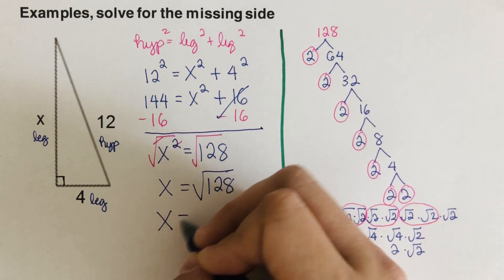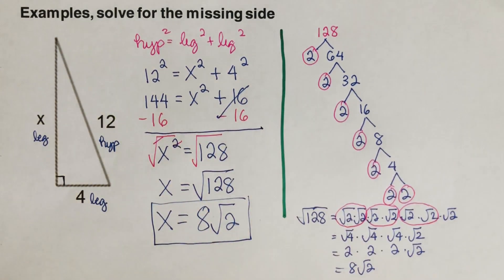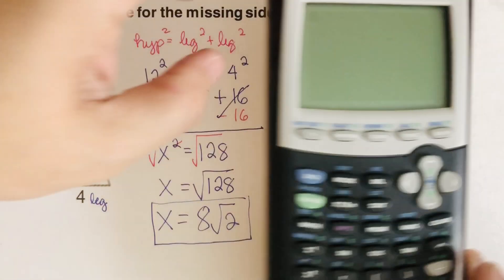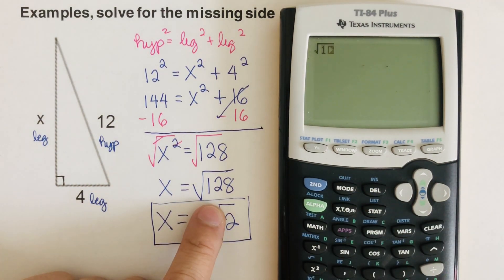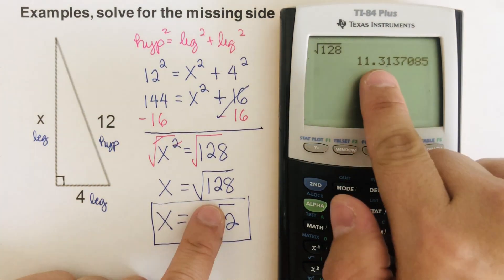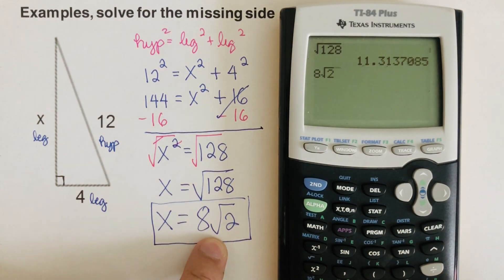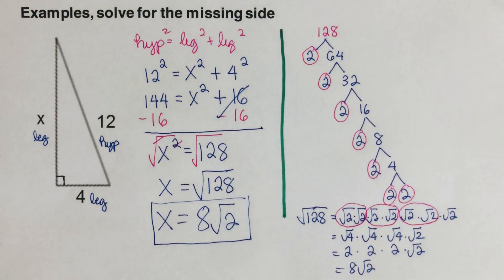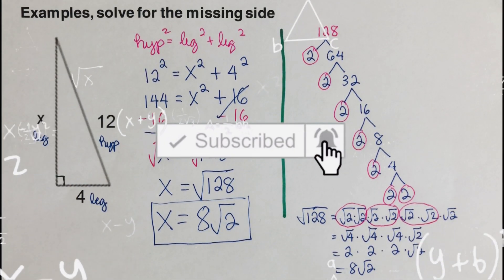The final answer is 8 square root of 2. We can verify by checking on the calculator: square root of 128 and 8 square root of 2 give the same decimal value — they match. If you got the same answers, great! If you found this video helpful, hit like and subscribe for more math videos. See ya!